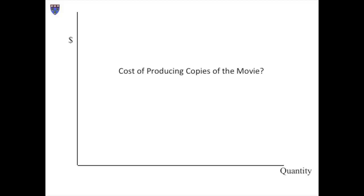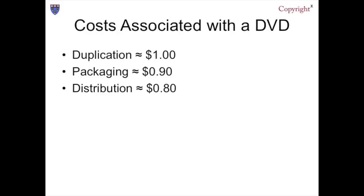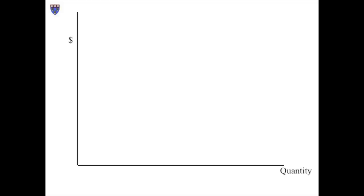The first thing we'd want to know in order to determine how much CDF should charge is the cost of producing the DVDs. CDF surely doesn't want to charge less than the cost of generating them. It costs approximately $1 to reproduce the film on the physical disc, $0.90 to package it, and $0.80 to distribute it to customers. So roughly speaking, $2.70 is the cost of making and distributing each copy of the film. That cost doesn't vary much with how many copies you make. Expressed graphically, this means that the marginal cost is low and flat.